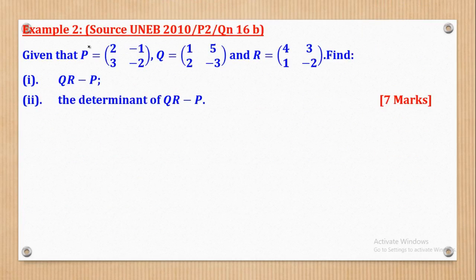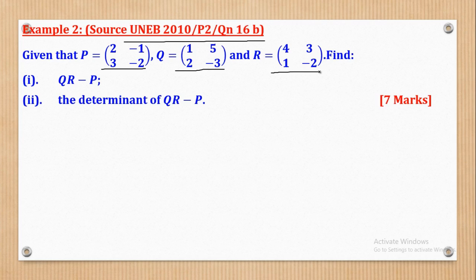Example 2 came from UNEB 2010 Paper 2 Question 16b. Given Matrix P = [2, -1; 3, -2], Matrix Q = [1, 5; 2, -3], and Matrix R = [4, 3; 1, -2], find: (i) 2R minus P, and (ii) the Determinant of 2R minus P.